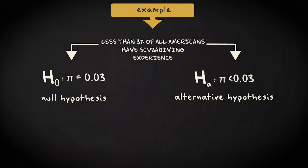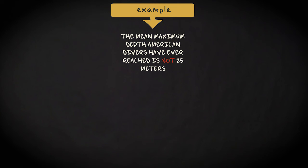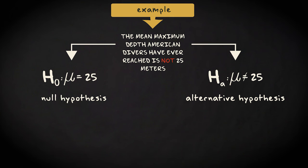Or suppose you're interested in the maximum depth a scuba diver has ever reached. You have good reasons to expect that the mean maximum depth American divers have ever reached is not 25 meters. Your alternative hypothesis now is, mu does not equal 25. The null hypothesis is, mu equals 25.